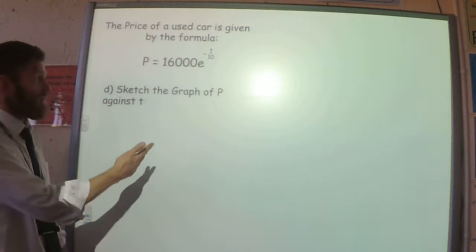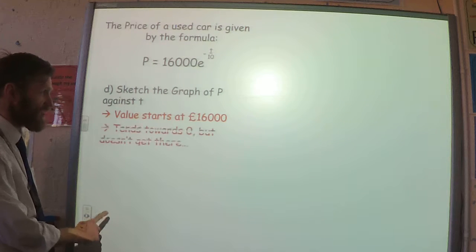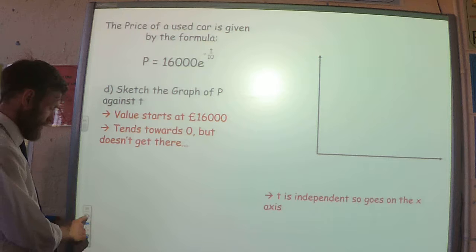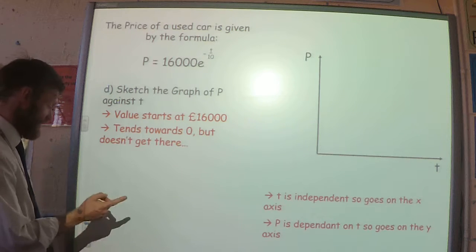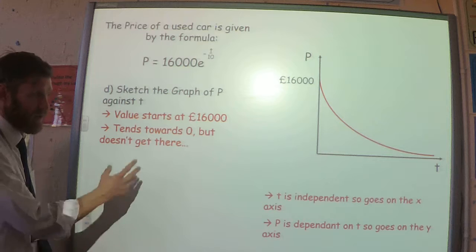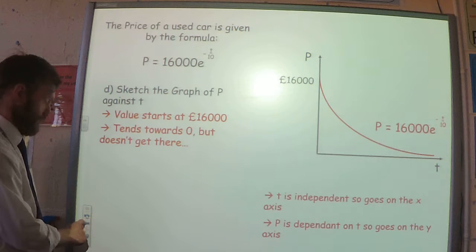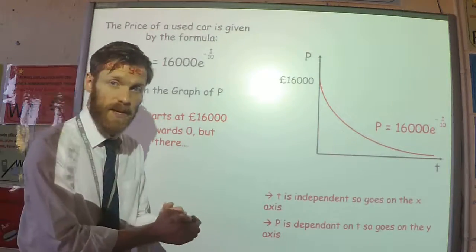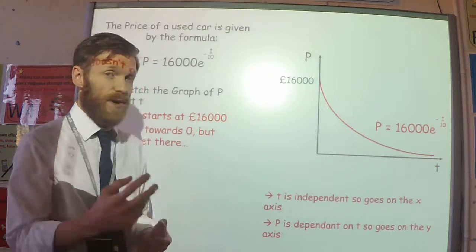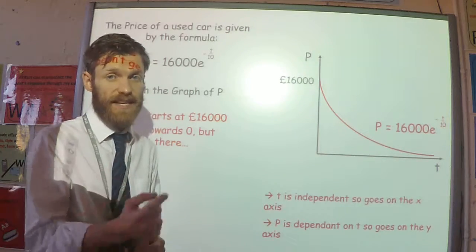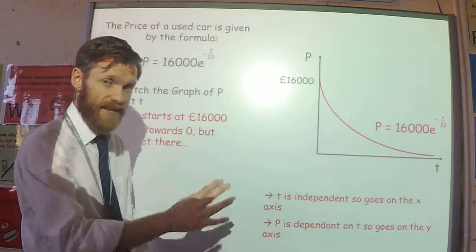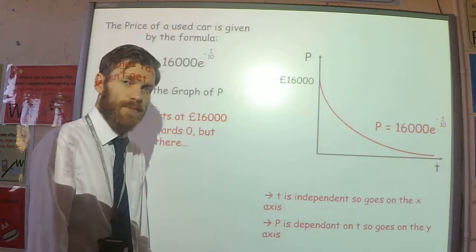Finally, part D: sketch the graph of P. We know it starts at £16,000, goes through approximately £9,700 after five years, and eventually tends towards 0. So with T on the x-axis and price on the y-axis, the graph starts at 16,000 and decreases, getting closer and closer to 0. That's Euler's number — all about continuous growth — and when used as y equals e to the power x, it's incredibly useful for any situation involving growth.